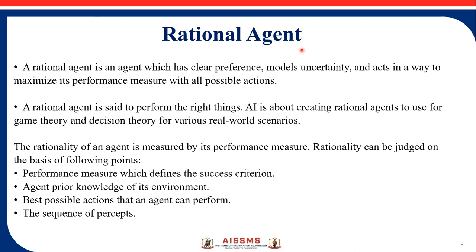That leads to the rational agent. A rational agent is an agent which has clear percepts, clear preference models that handle uncertainty, and acts in a way to maximize its performance measure with all possible actions. A rational agent is said to perform the right things. AI is about creating rational agents for use in game theory and decision theory for various real-world scenarios.